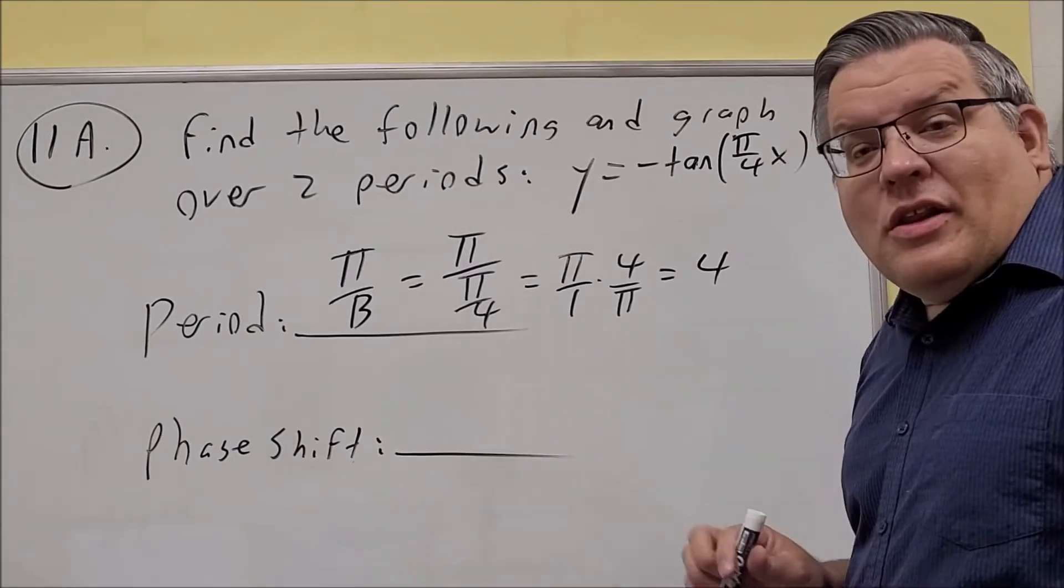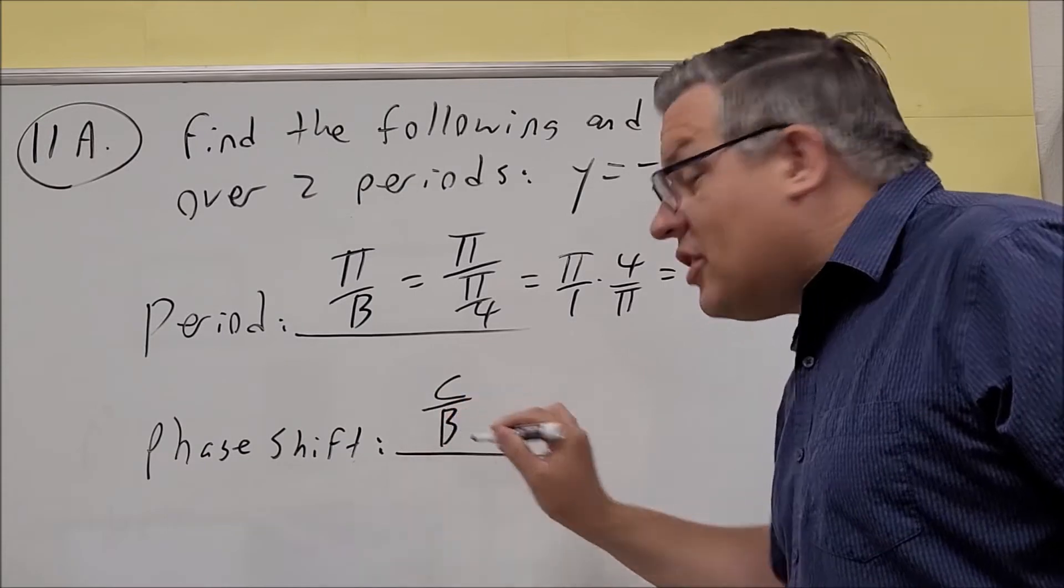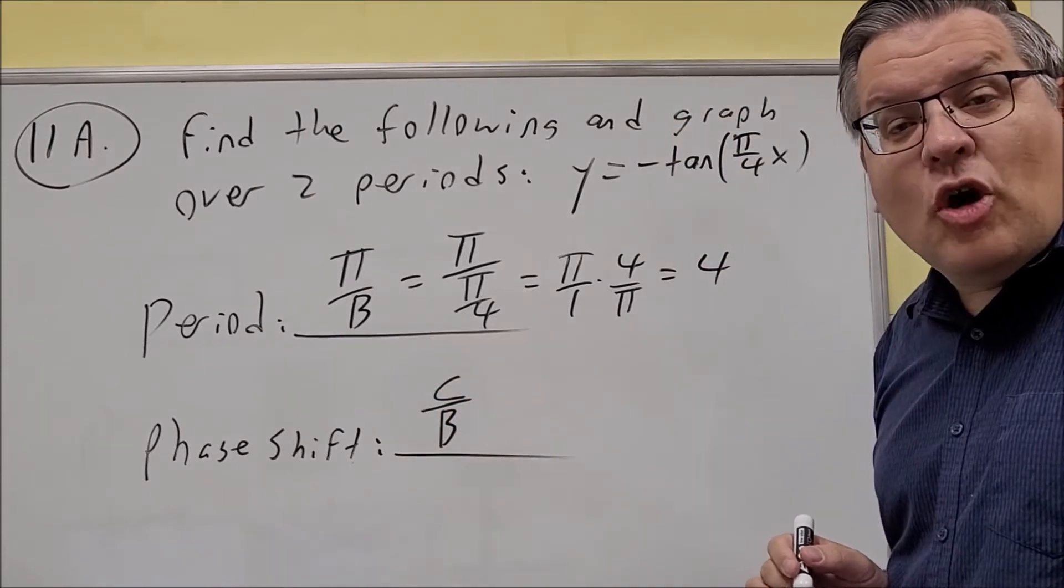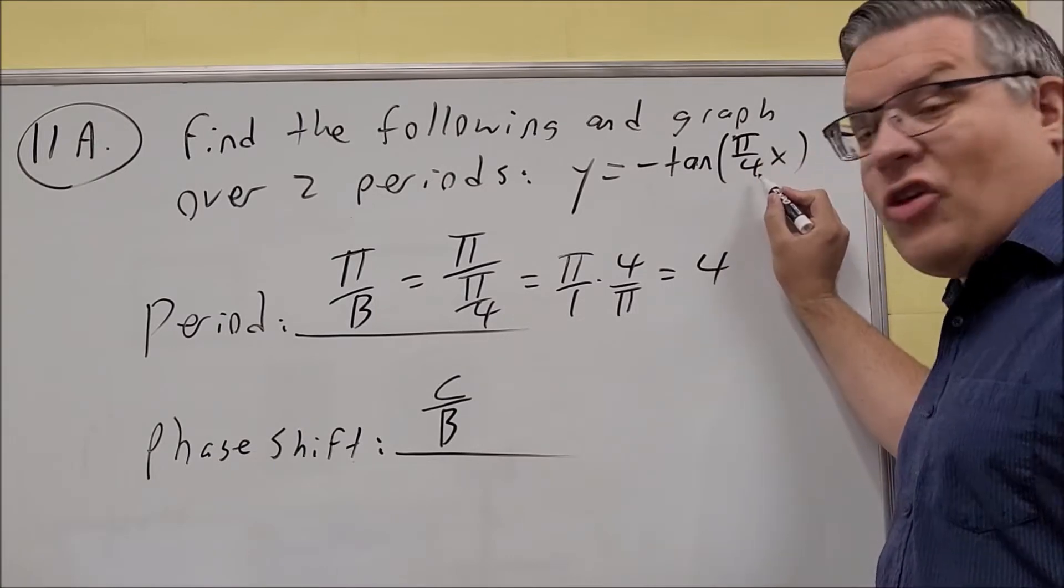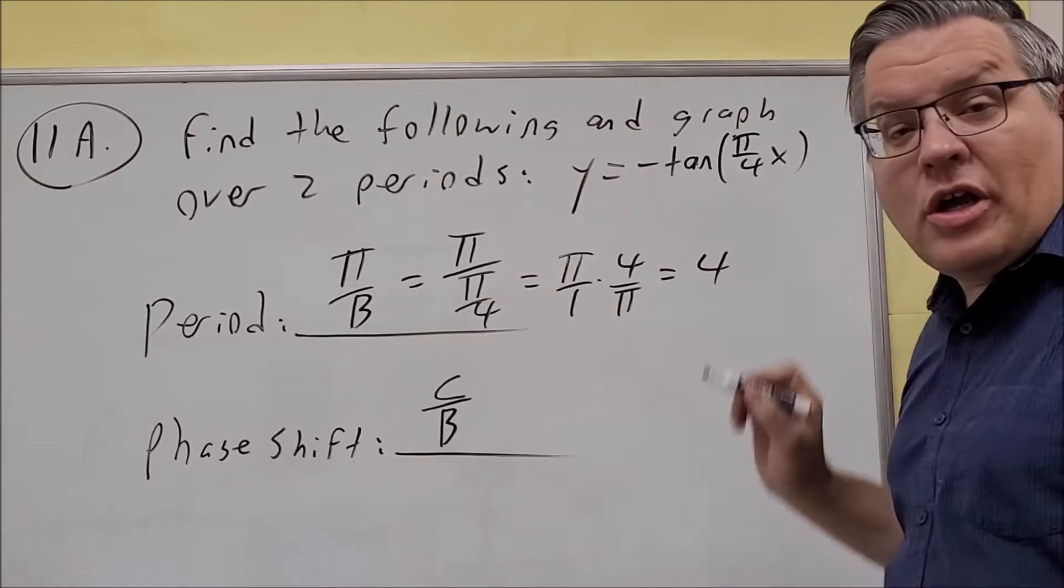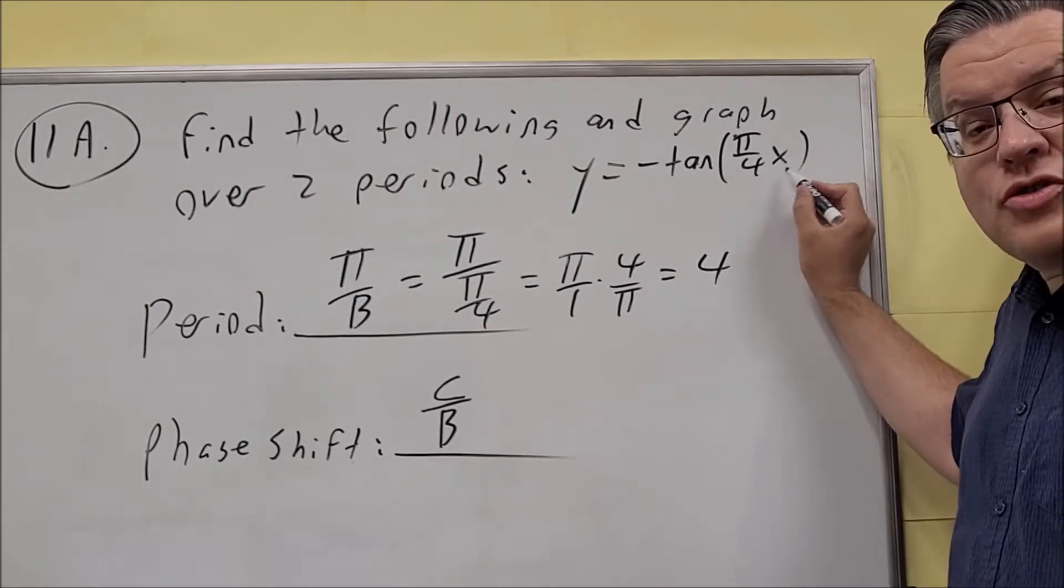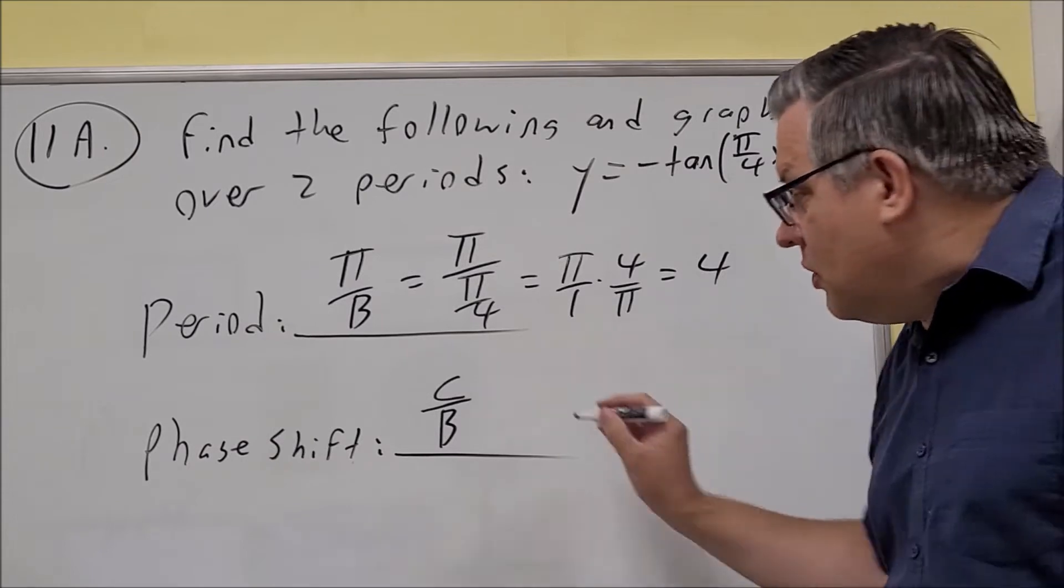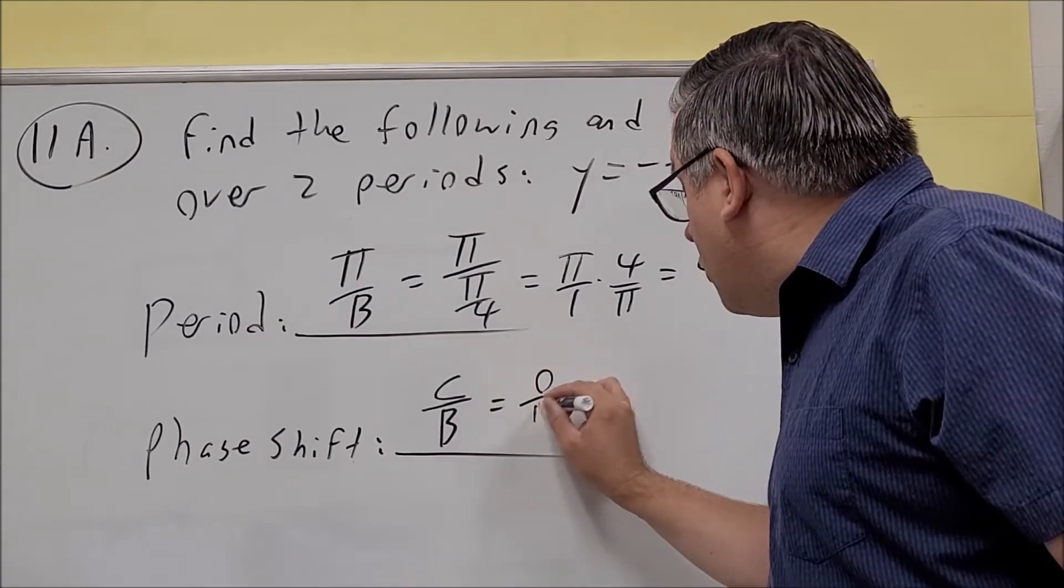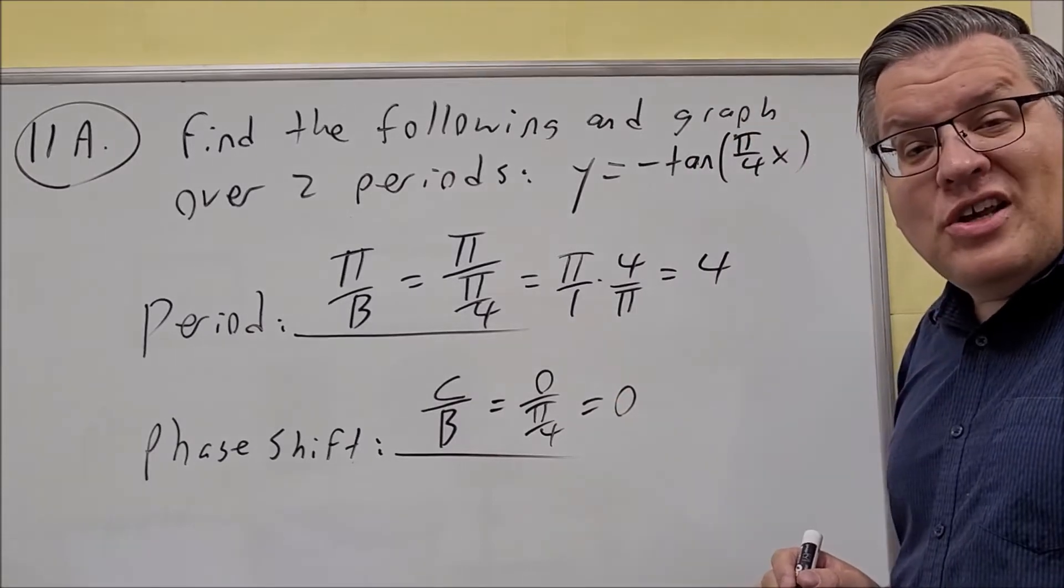Next, we want to find the phase shift. The phase shift for both tangent and cotangent is c over b. This is your b in front of the x, and c is the number after the x. But for this example, there's no plus or minus, which means c is 0. So we have 0 over π over 4, which means the phase shift is 0.